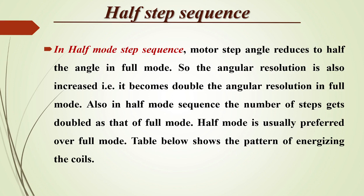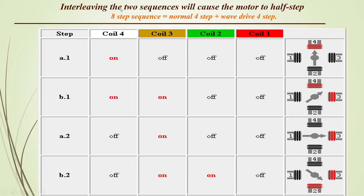In the half step sequence, the motor step angle is reduced to half, so the angular resolution doubles compared to full mode. The number of steps also doubles. Half mode is usually preferred over full mode. It is a combination of one-phase-on and two-phase-on modes, alternating between them. Because it combines both modes, it takes 8 steps to complete one full rotation — that is, the normal 4-step plus the wave drive 4-step combined.